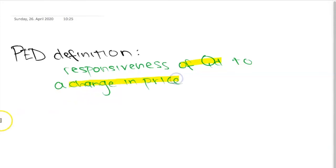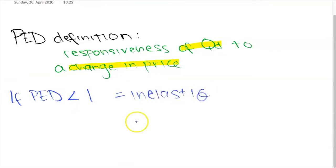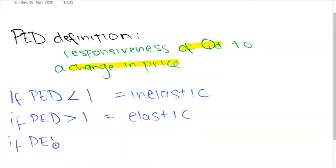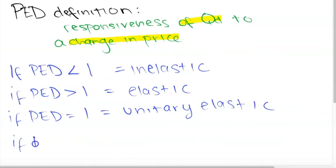If there's inelastic demand and PED is less than 1, then the percentage change in quantity demanded is smaller than the percentage change in price — quantity demanded is relatively unresponsive to price changes. If PED is greater than 1, quantity demanded is relatively responsive to price changes. If it is unitary elastic, quantity demanded changes proportionally to a change in price.